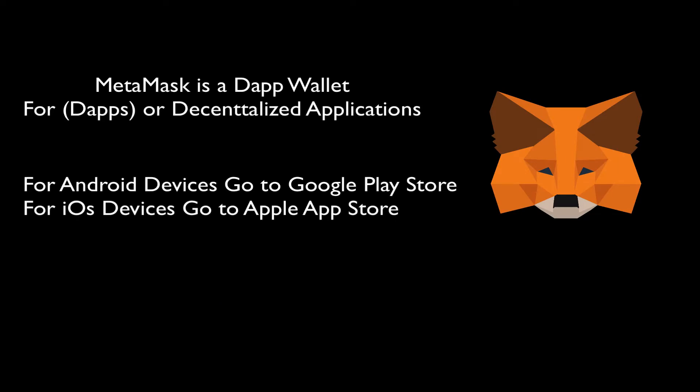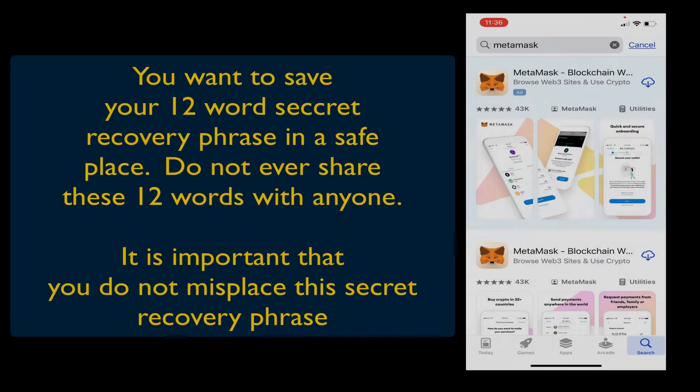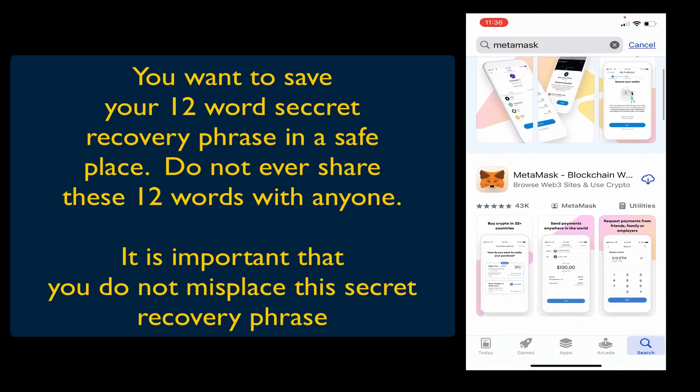The first thing you want to do is go to your app store. Once you tap on the app store, tap on the search bar and just type in MetaMask. When you hit search, it's going to give you the options to download the MetaMask app.